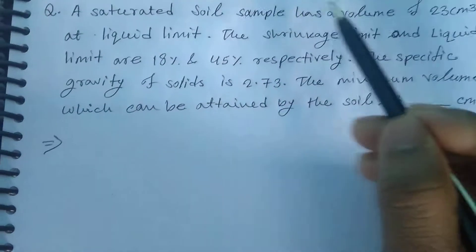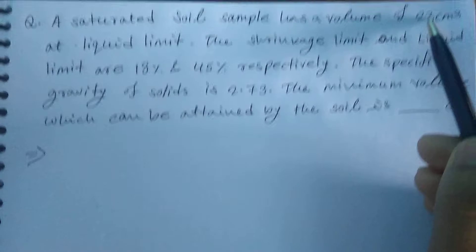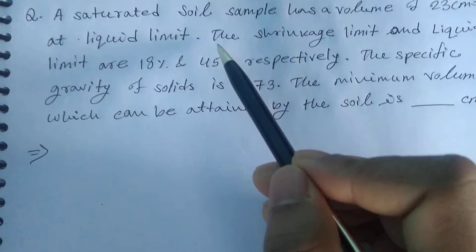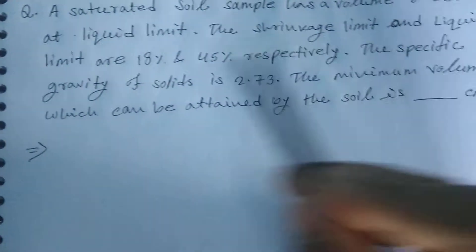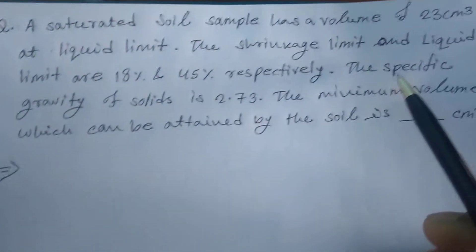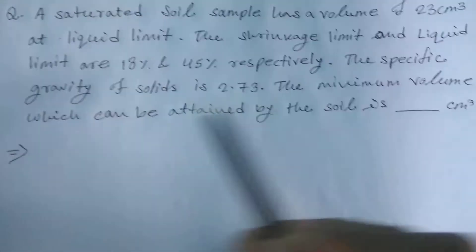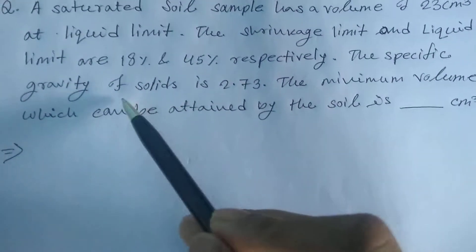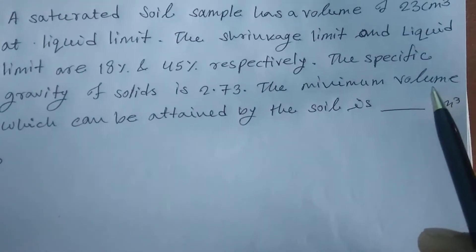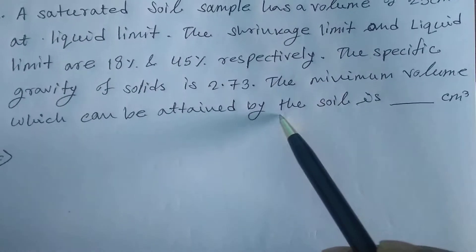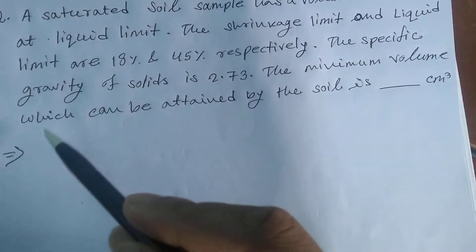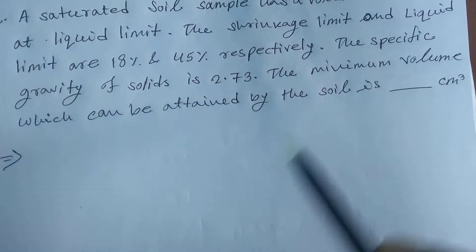A saturated soil sample has a volume of 23 centimeter cube. The shrinkage limit and liquid limit are 18% and 45% respectively. The specific gravity of soils is 2.73. The minimum volume which can be attained by the soil is how many centimeter cube?